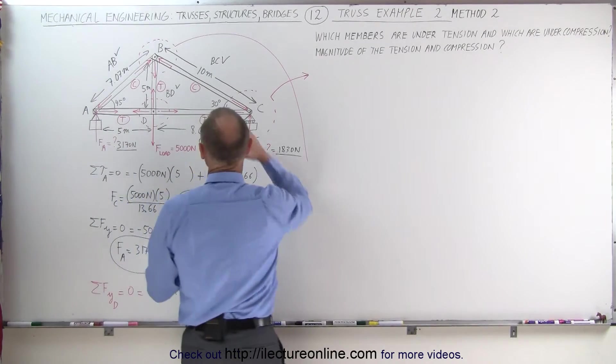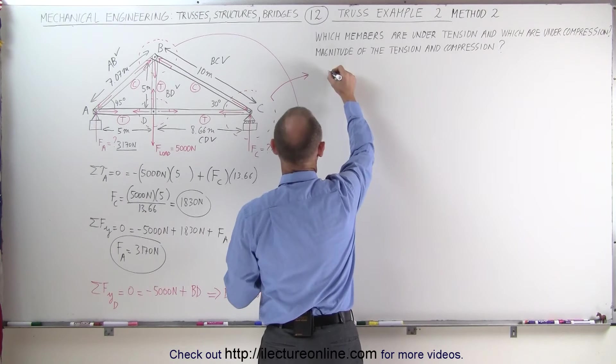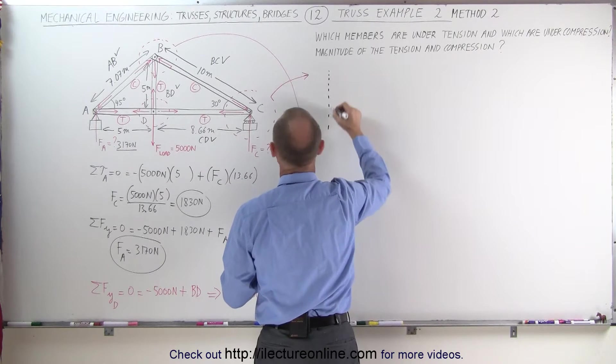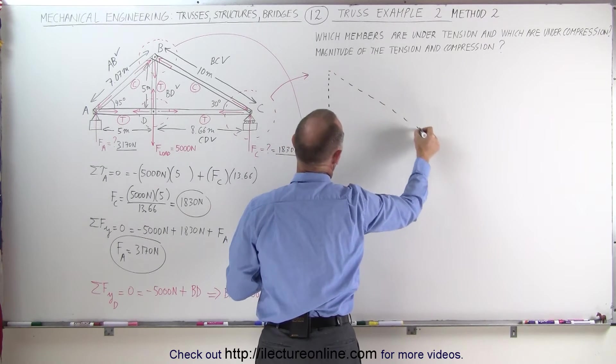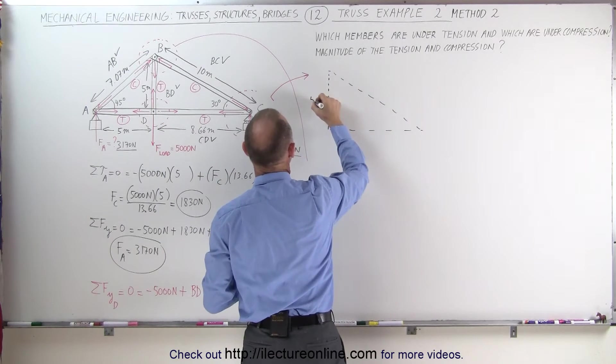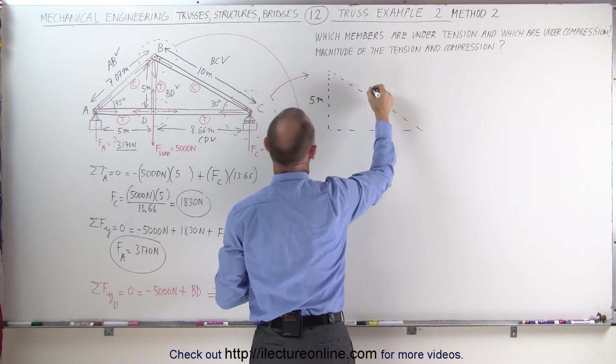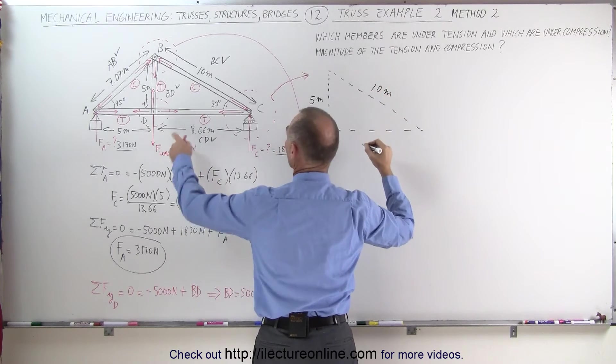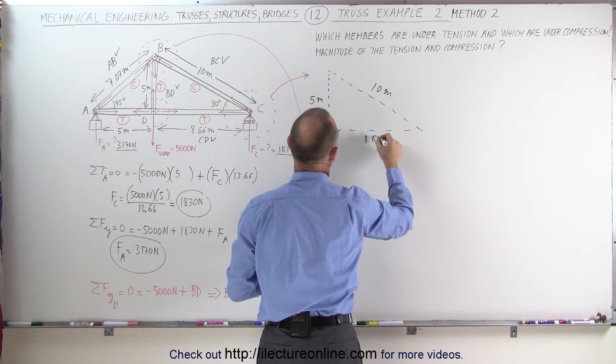In other words, if we take this triangle right here and we draw it out, notice that the lengths here are 5 meters, here the length is 10 meters, and here the length is 8.66 meters.